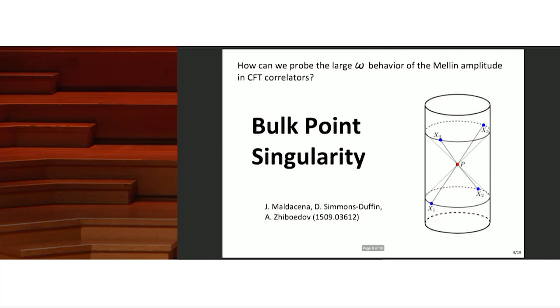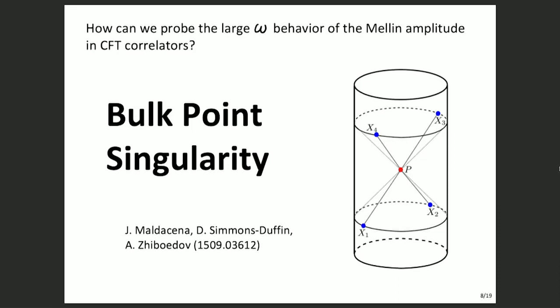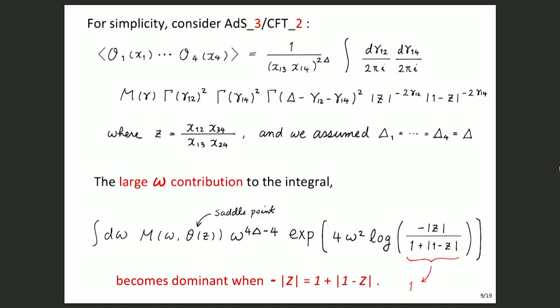The answer was already given by Juan Maldacena, David Simmons-Duffin, and Zhiboedov — four years ago, two of the authors are here. The key concept is the bulk point singularity. Let me explain this in the context of ADS3-CFT2, because notations are simpler in lower dimensions.